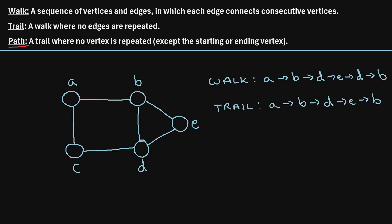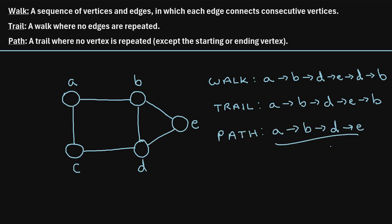Now let's consider what is a path. A path is a trail where no vertex is repeated, in addition to no edge being repeated, except the starting or ending vertex. As an example, let's say we start at vertex A, then move to B, then D, then E, and stop there. That would be an example of a path, because no edge is visited more than once and no vertex is visited more than once.